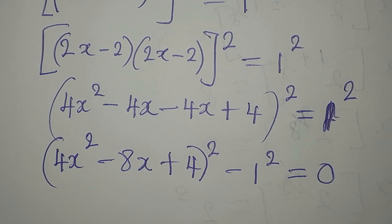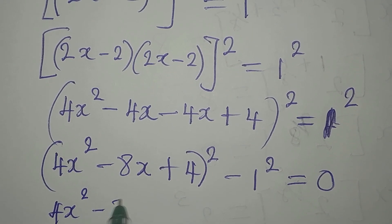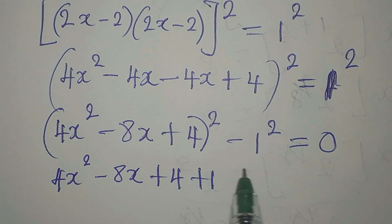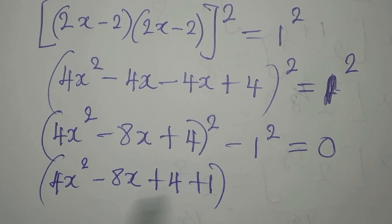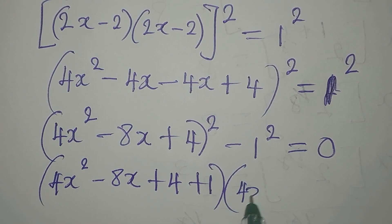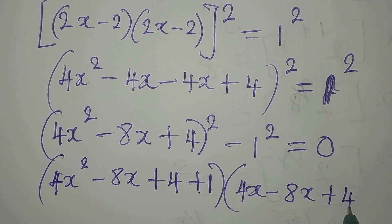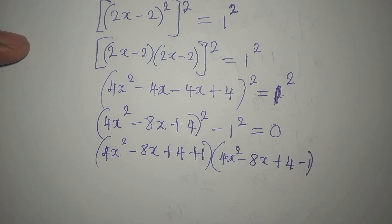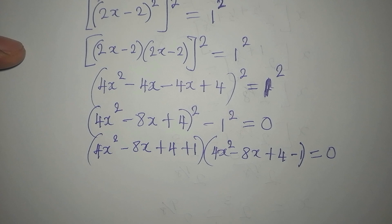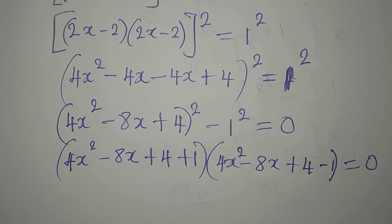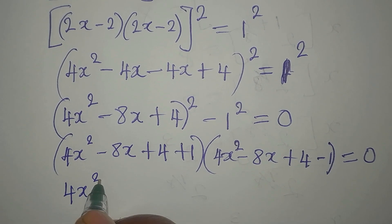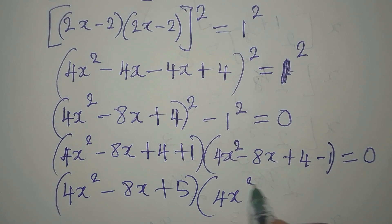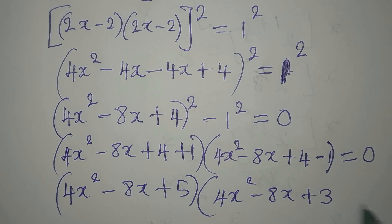This is the point where we apply the difference of two squares. We're going to have 4x squared minus 8x plus 4 plus 1 in one bracket — because for the difference of two squares you add both terms in one bracket and subtract in the other — giving 4x squared minus 8x plus 5. In the second bracket we have 4x squared minus 8x plus 3, and this equals zero.